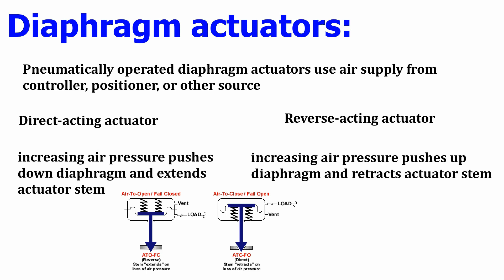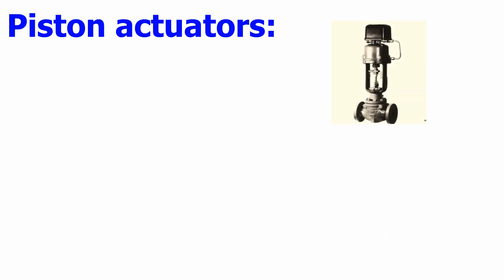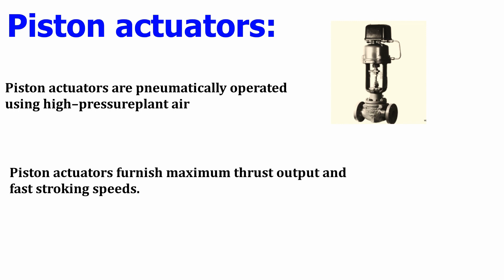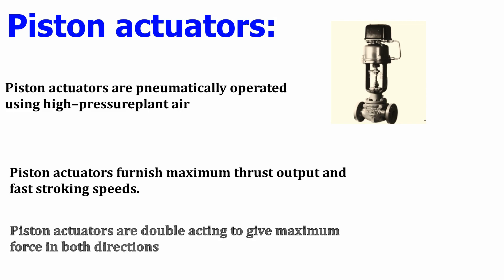Next, we look at piston type actuators. Piston type actuators are pneumatically operated but they use high pressure instrument or plant air — sometimes more than 8 bar or up to 150 psig. Piston actuators provide maximum thrust output and have a unique feature: fast stroking speed, making them suitable where immediate action is needed. They are double acting, providing maximum force in both directions, and can be used for both direct and reverse acting.